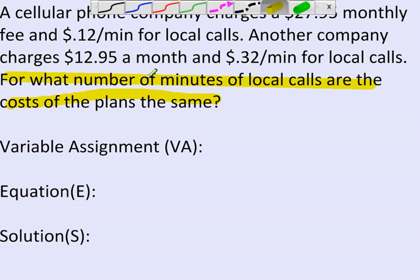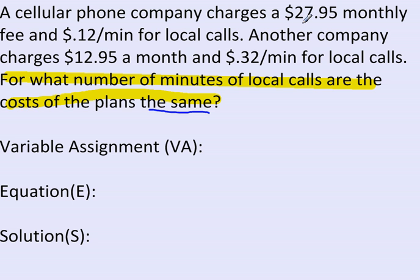So what we're doing is comparing two plans. And the key here is that it says the same. The same means when are they equal. So that's how we know it's going to be a variable on both sides type problem, because we're looking to see when they are both equal.